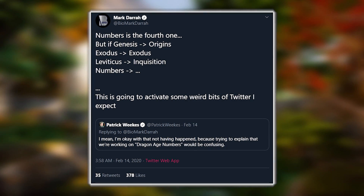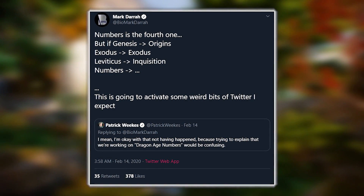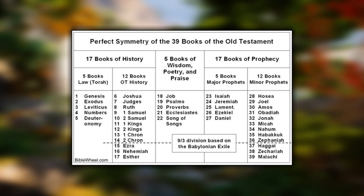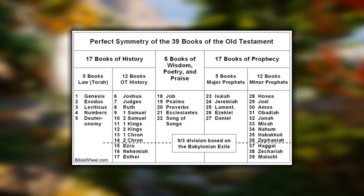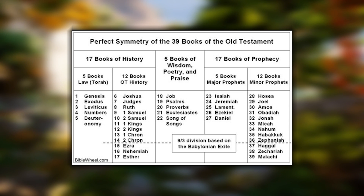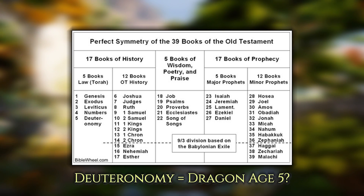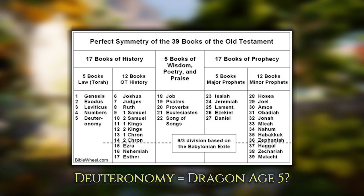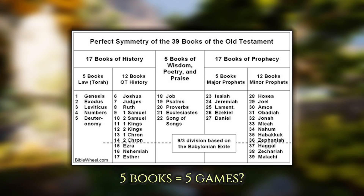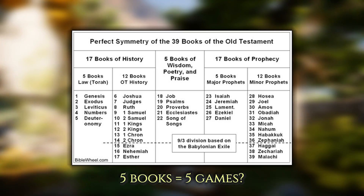So for those who are unaware, Mark Darragh is comparing each of the books of the Old Testament to a Dragon Age game: Genesis is like Origins, Exodus is like Dragon Age 2, Leviticus is like Inquisition, and Numbers is like Dragon Age 4. It's worth noting that the Torah, the Jewish holy book, has a total of five books — just like Dragon Age was originally planned as a five-part saga, so this correlation could actually mean something.